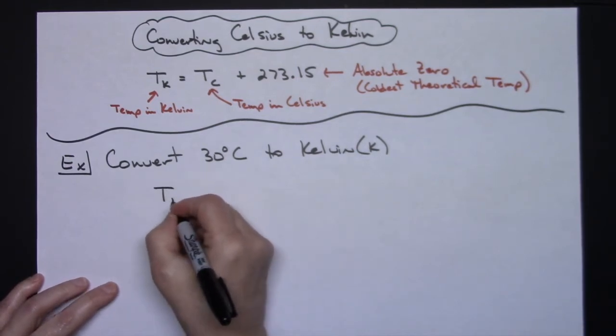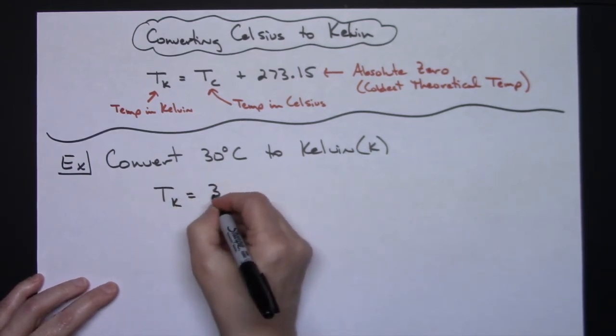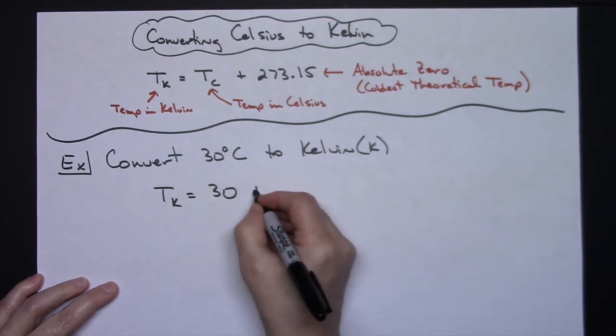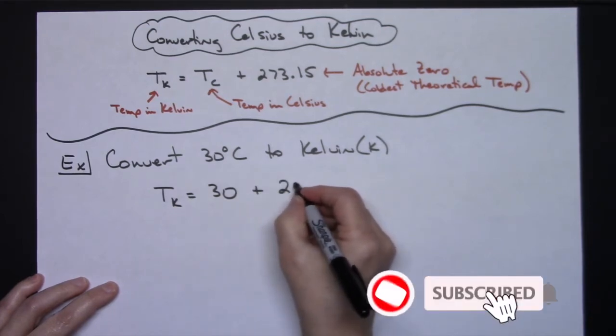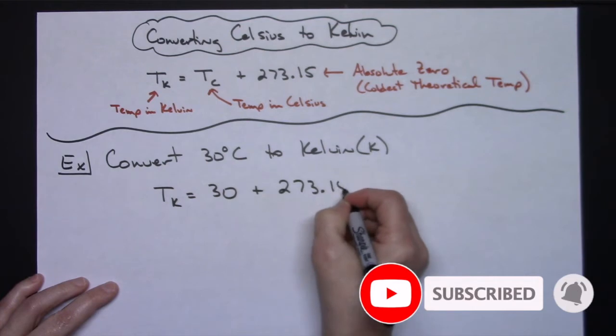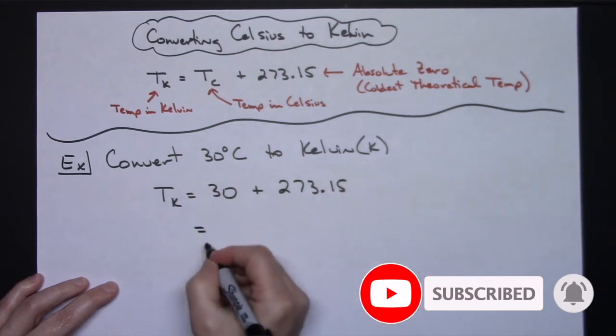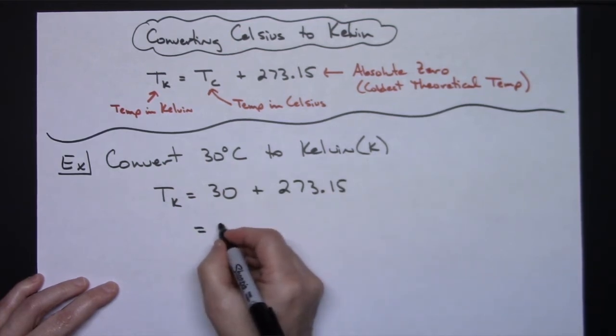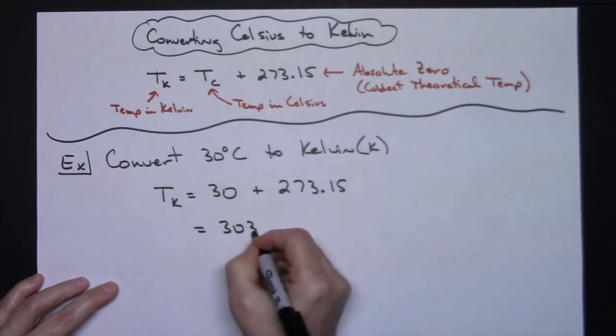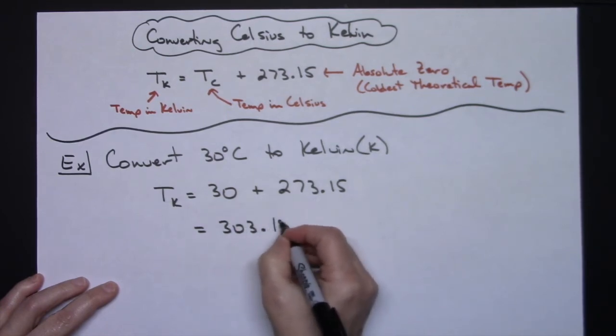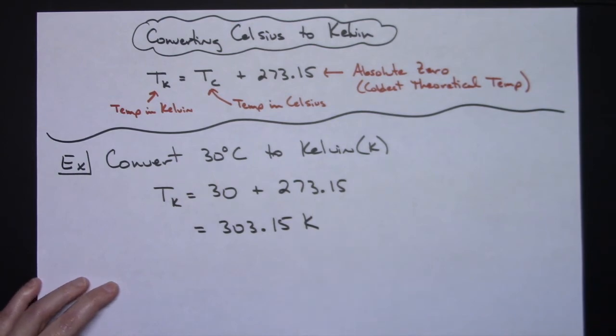So my temperature in Kelvin is going to be equal to the 30 degrees plus 273.15, and then adding that up there I'm going to have 303.15 degrees Kelvin.